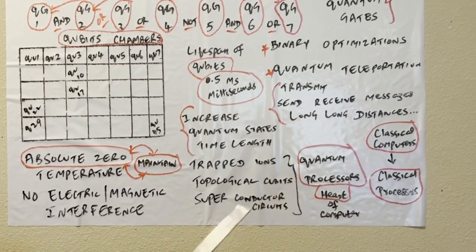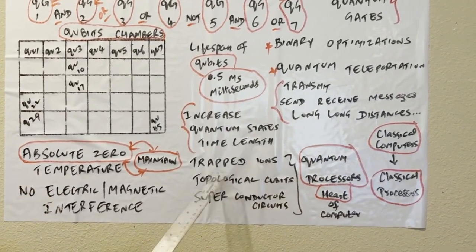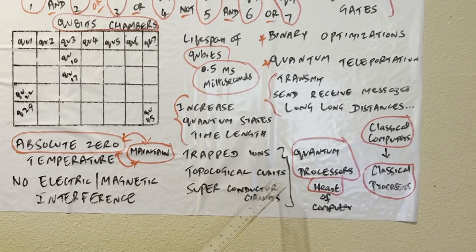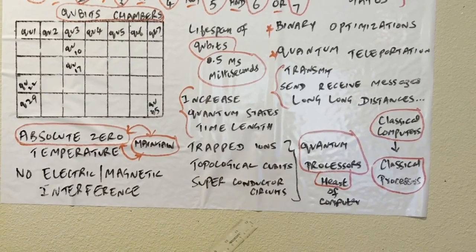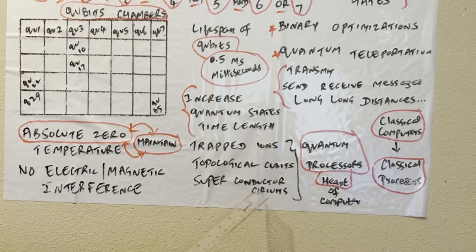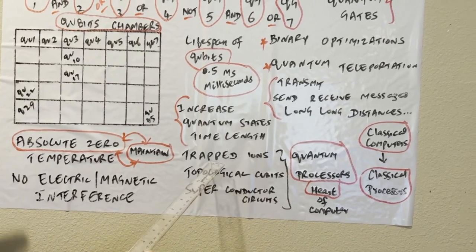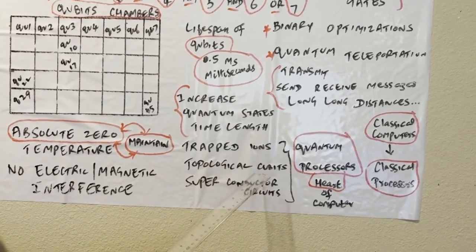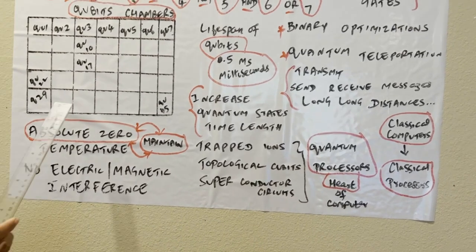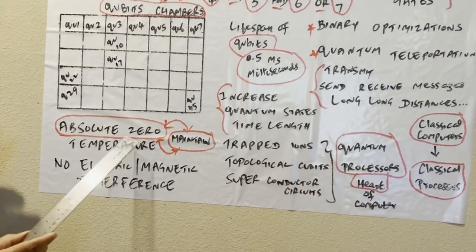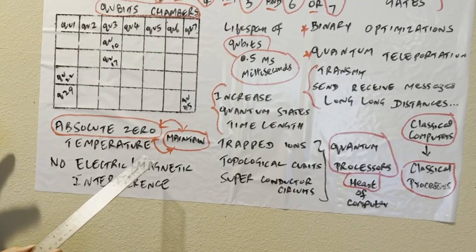These are some technology used to achieve the quantum processor, high speed: trapped ions, topological qubits, superconductor circuits. I have explained a little bit about these. In future videos I will talk about what is trapped ions, topological qubits, how to maintain this. Super computer is almost equal to absolute zero. You have to maintain the